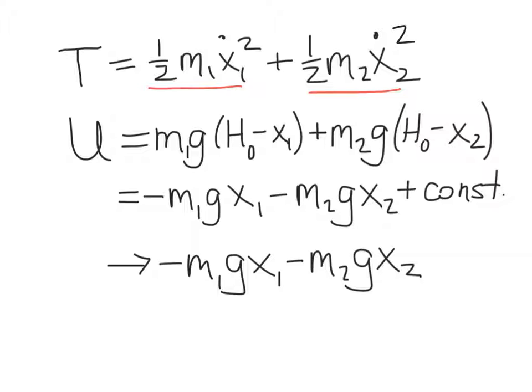The next thing we need to do is write the potential energies for each of the two masses. So we've got mg h, h being the height above some reference surface. Now, remember, because we're measuring the positions of the two masses as being positive in the downward direction, we can write that height, h, above some reference surface for each mass in this way.